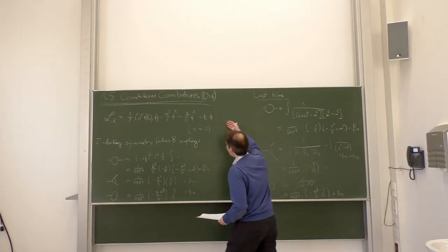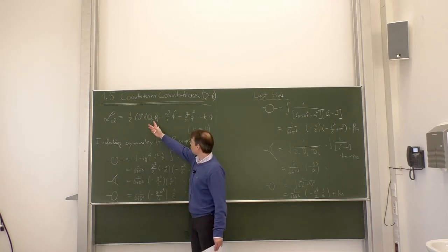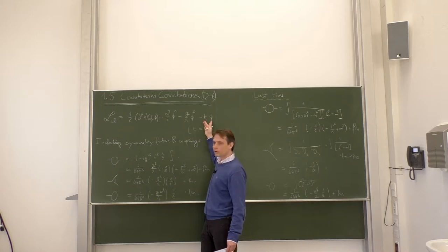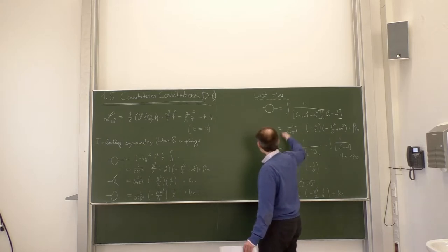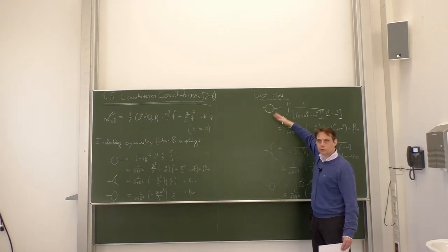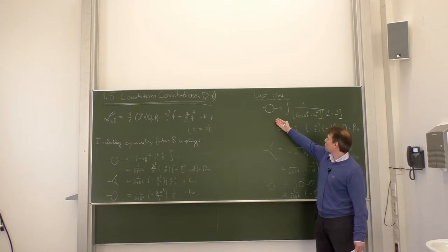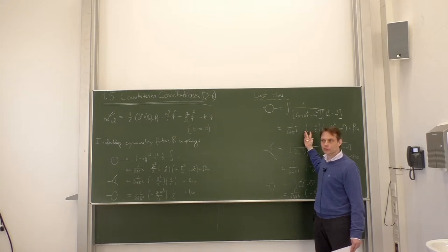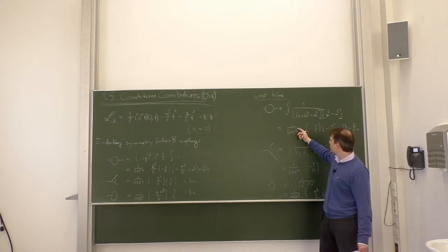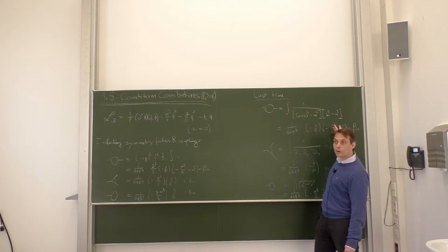Here I wrote down the Lagrangian of phi-cube theory involving a kinetic term, mass term, interaction term, and a tadpole term. The tadpole term is set to zero for now. Last time and in the exercise, we computed various loop diagrams without specifying the theory. We showed that this self-energy diagram gives rise to a 1/ε divergence in six dimensions, with prefactor i over 64π³ times minus 1/ε times a polynomial of second degree in the momentum and mass.